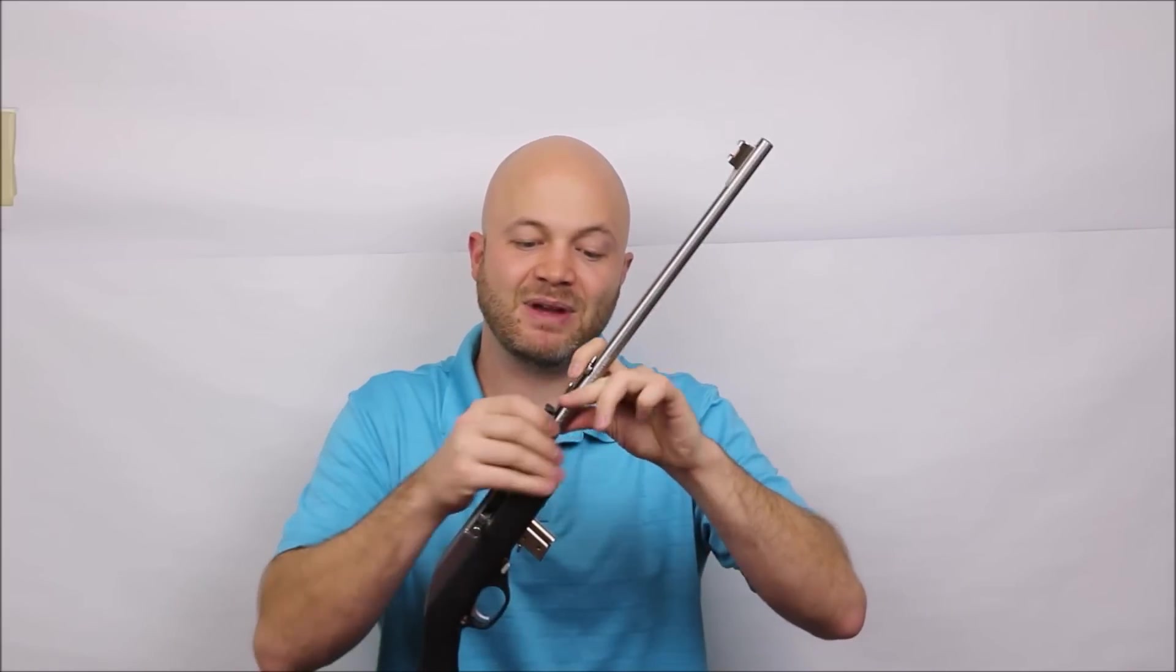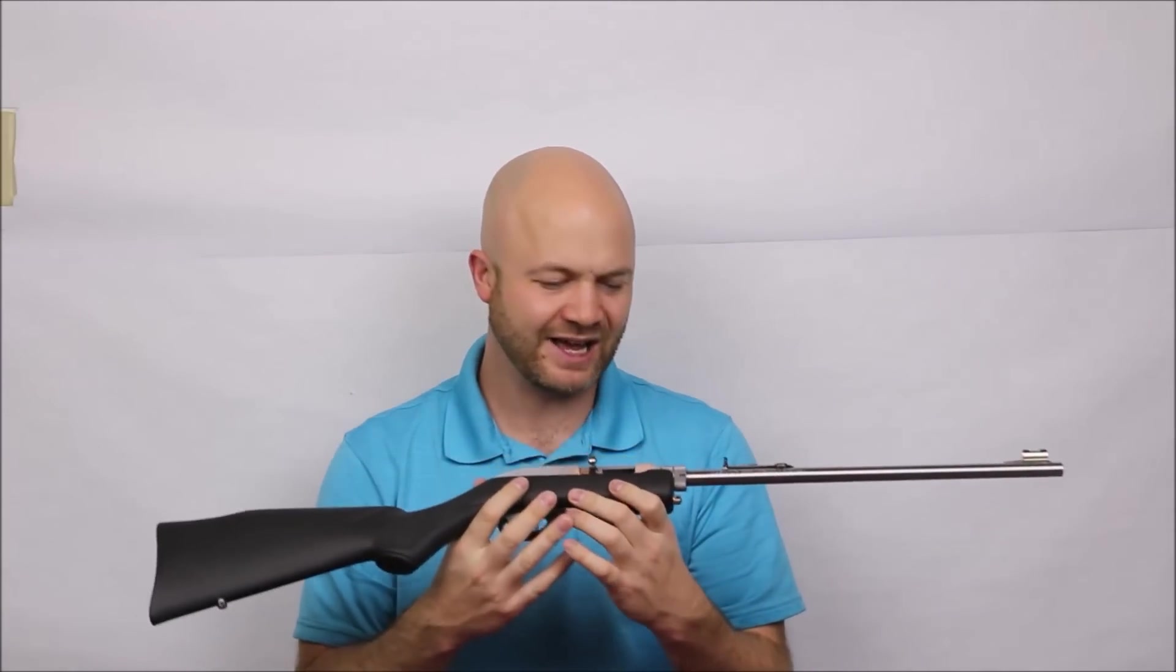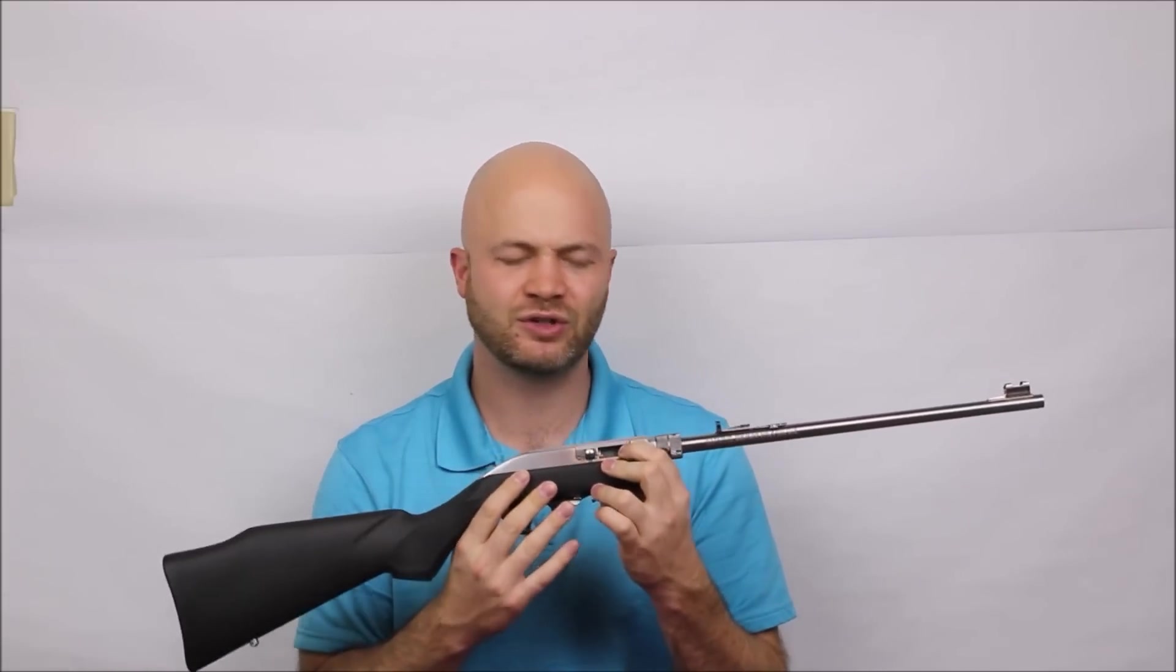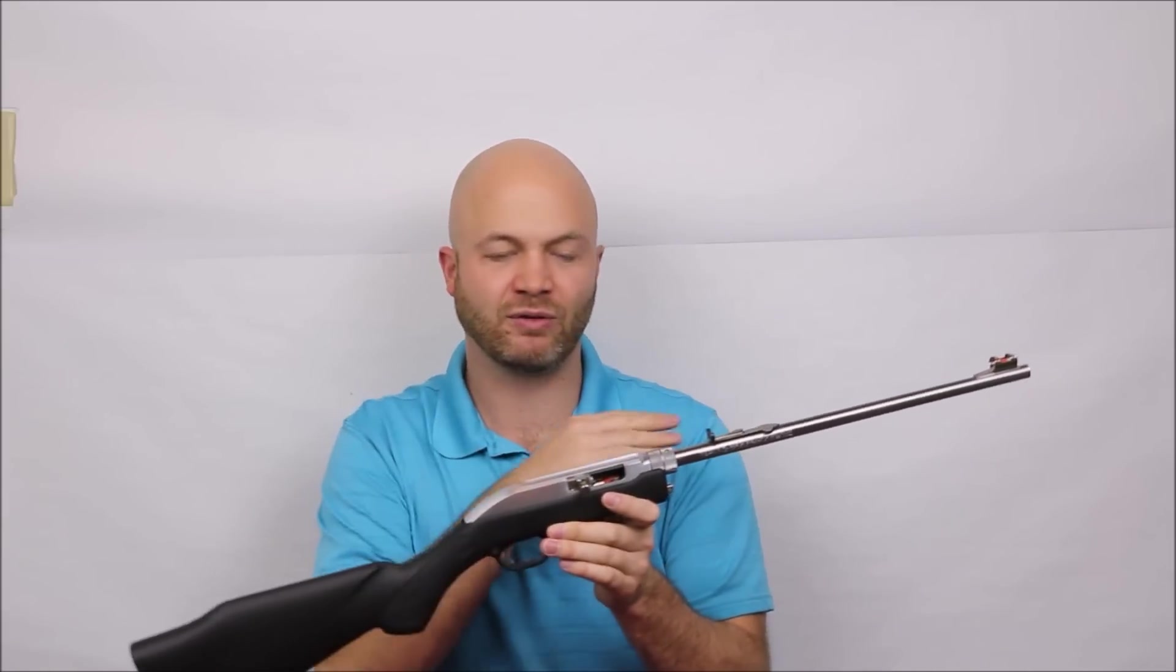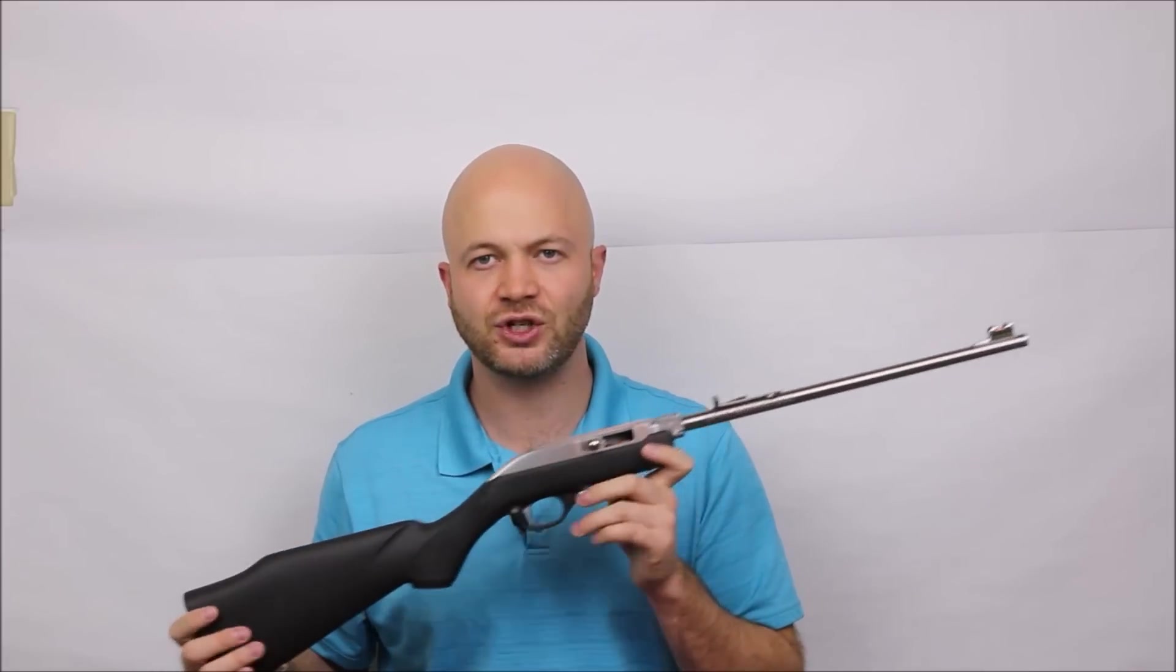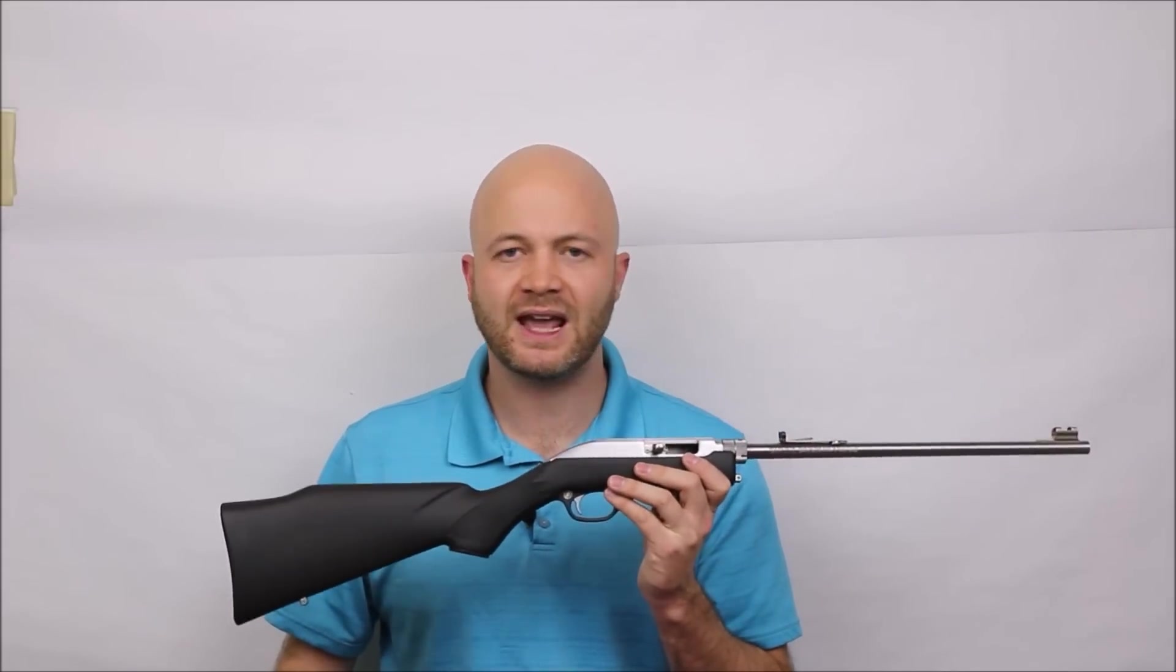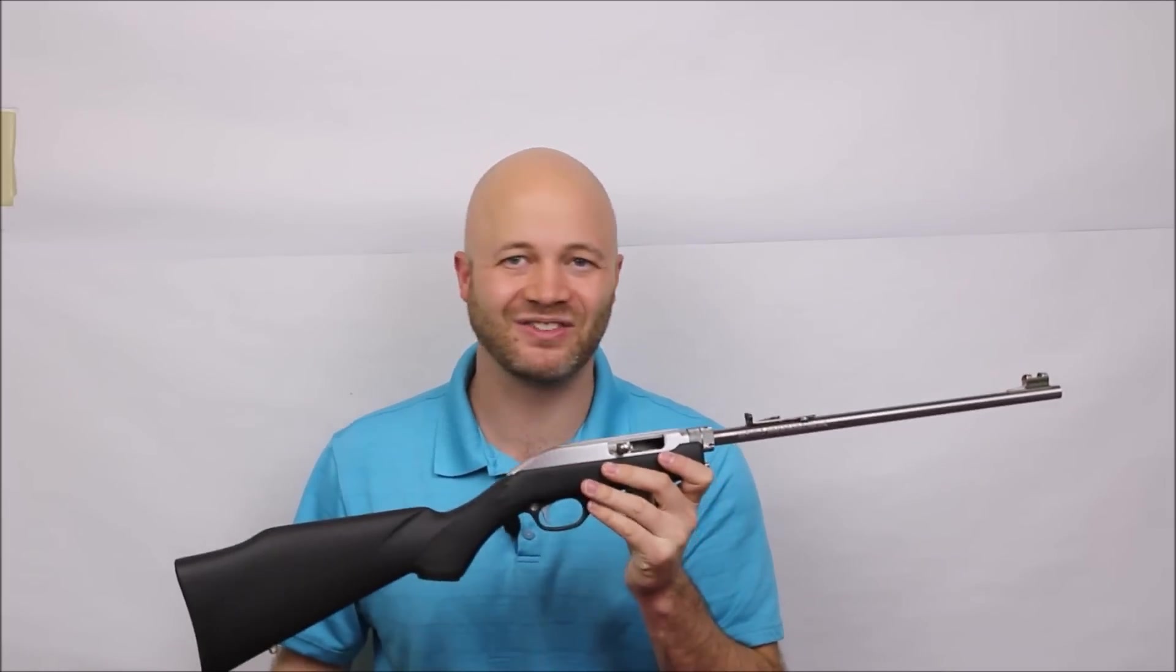Overall, should you buy a Marlin Papoose? Well, there's not really a lot of takedown 10/22s out there in terms of semi-autos. These guys are pretty inexpensive. They run a nice stainless setup, so you're not going to run into as many rusting issues. The biggest competition to this one will be the Ruger 10/22 takedown. The cost is quite a bit more on the Ruger.